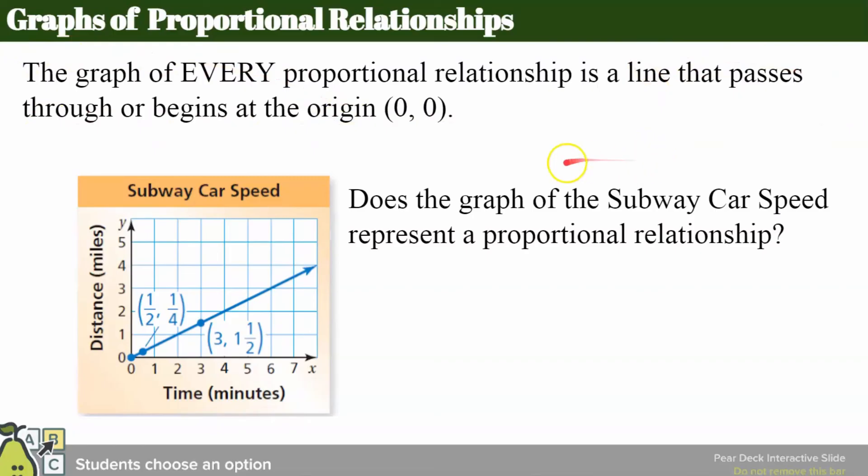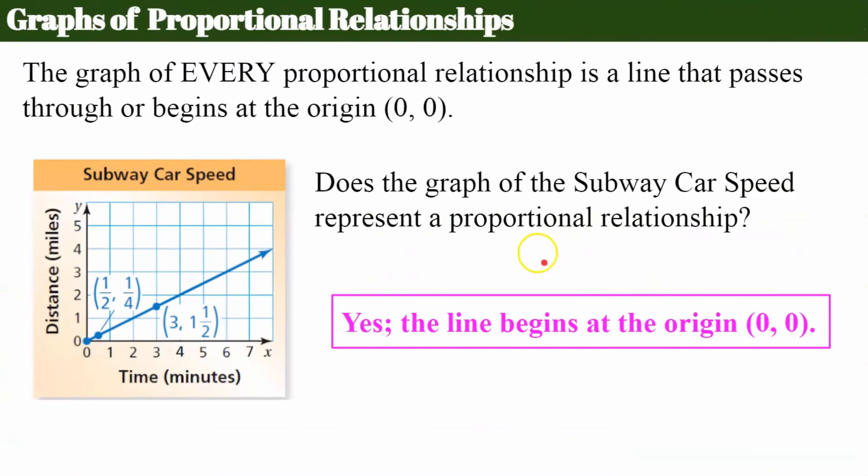I now want to know, does this graph of the subway car speed represent a proportional relationship? Yes or no? And here we go. Yes. Since the line begins at the origin, or passes through, however you want to phrase that, it starts here. (0,0) is a point on the line. Therefore, this is a proportional relationship.